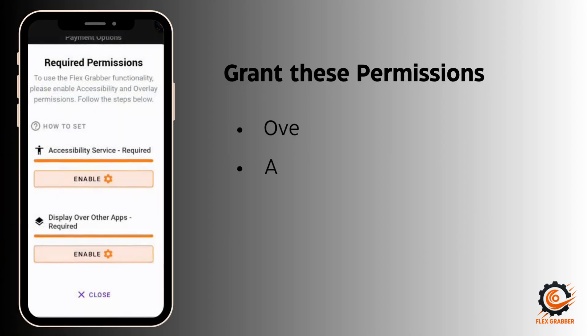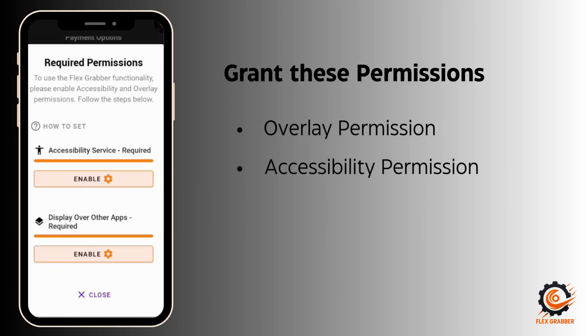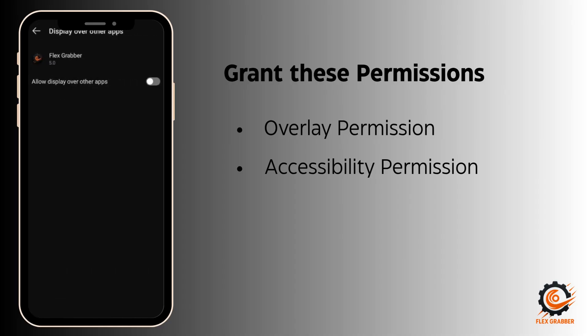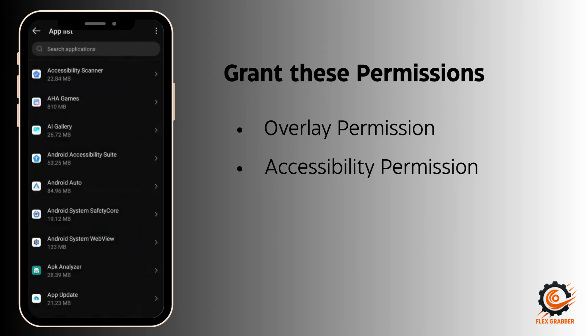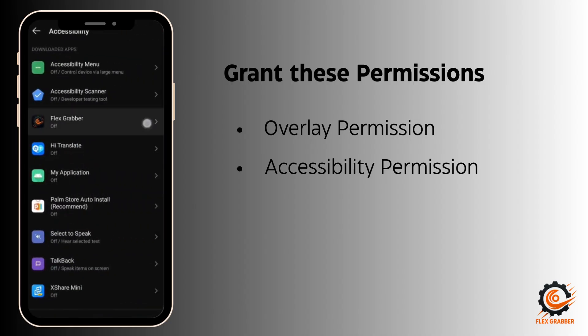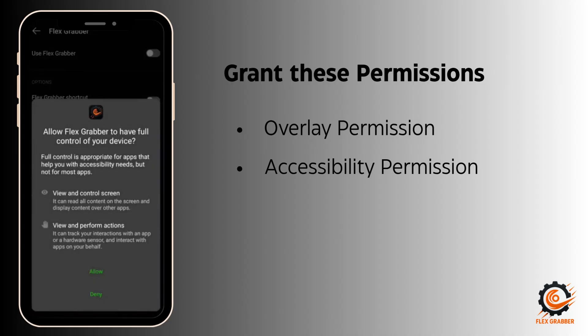We have the most important things to start the app. You have to give some permissions in order to start finding blocks. The first is overlay permission — click on it and select Flex Grabber to enable it. The second is accessibility permission, which is more important. Select the app and enable it by clicking on it.